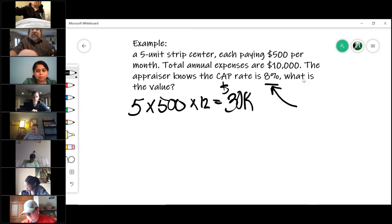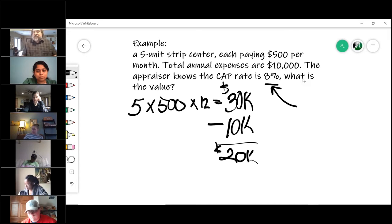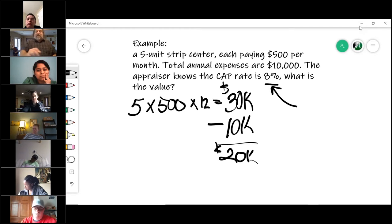That is the gross operating income. But I need the net. How do I get to the net operating income? I subtract the expenses that I told you were $10,000 on an annual basis. So you end up with $20,000 in net operating income.